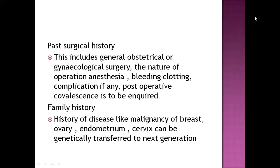Past surgical history covers surgery and anesthesia — the type of surgery whether minor or major, the kind of anesthesia used, whether there was any bleeding, and any post-surgical complications. Family history requires three-generation information: how many members were in the family and whether they had any disease related to our current concern.